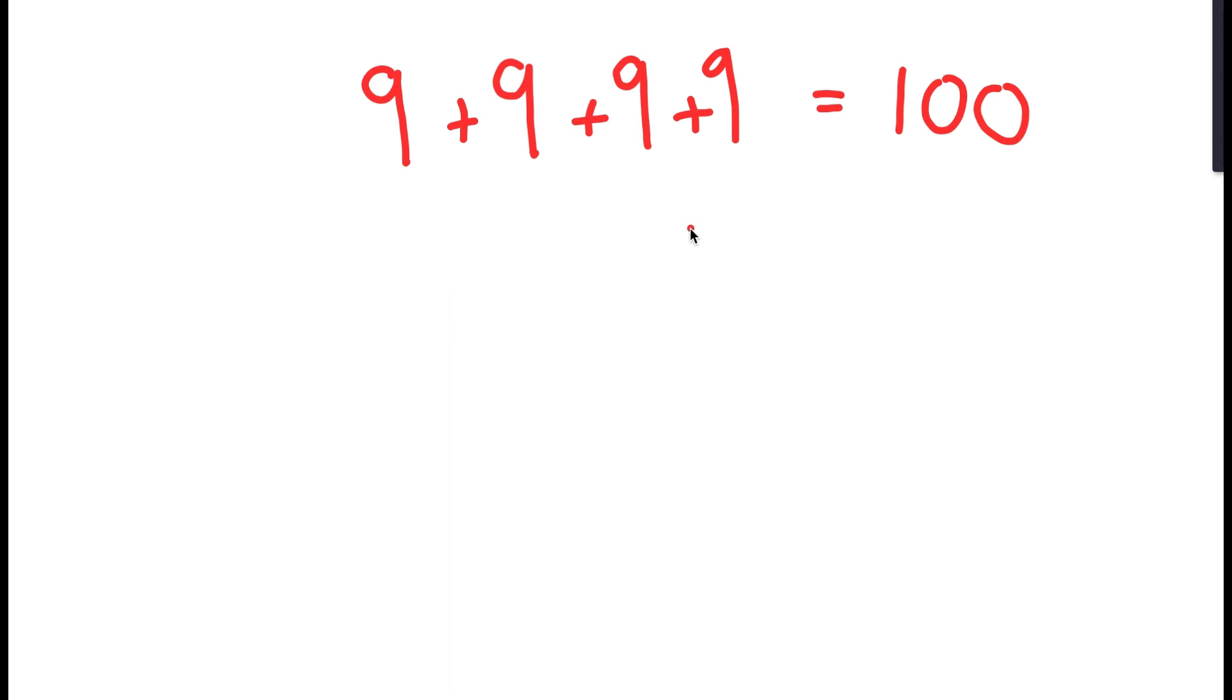So now what if I instead multiply two nines to get 81, and then add these two? Well in that case I get 81 plus 9 plus 9, which is equal to 99, which again is not equal to 100. So this won't work as well.